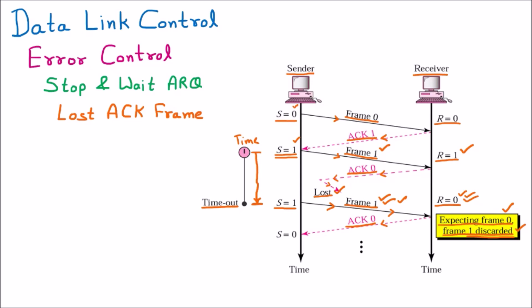The receiver, realizing its acknowledgement must have been lost, discards the duplicate packet 1 and sends the acknowledgement again asking for the 0th packet. The sender then sends the zero packet. In summary, when a sender transmits a packet and the acknowledgement is lost, the sender retransmits; if the receiver gets a duplicate, it discards it and re-requests. This covers both lost data frame and lost acknowledgement handling in Stop and Wait ARQ.